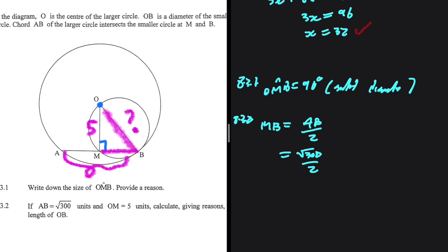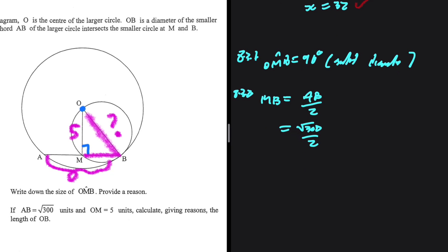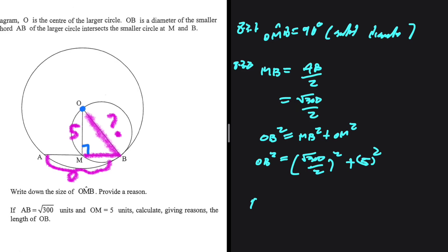So we know that MB equals square root of 300 divided by 2. If I go ahead and use theorem of Pythagoras—seems quite fishy; I don't know why it is 4 marks because it is pretty much straightforward—okay, so if I go ahead and use theorem of Pythagoras, I'm gonna have OB squared equals MB squared plus OM squared. So OB squared will equal MB, so MB squared: square root of 300 divided by 2, squared, plus OM—OM is 5 units, so I have 5 squared. So OB squared will equal—let me put that in my calculator—square root of 300 divided by 2, squared, plus 5 squared. That is 100.